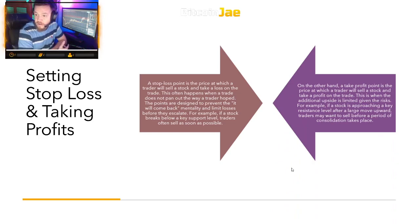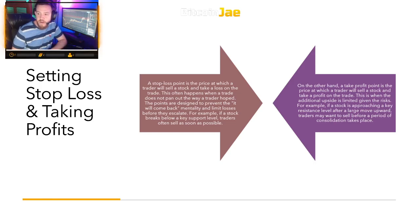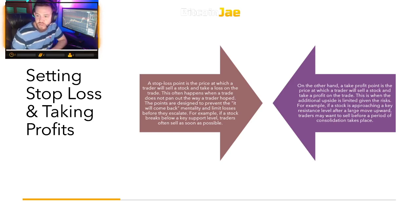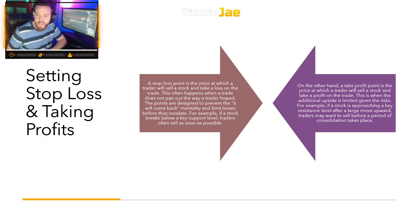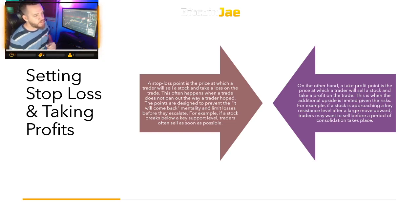On the other hand, a take-profit point is a price at which a trader will sell a stock and take a profit on the trade. This is when the additional upside is limited given the risk. For example, if a stock is approaching a key resistance level after a large move upward, traders may want to sell before a period of consolidation takes place.